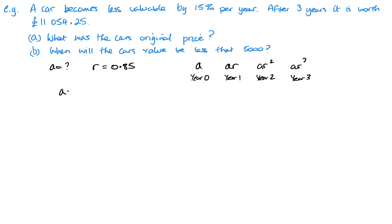So looking at this, we've got ar cubed is going to be equal to that 11,054.25. Now we know that r is 0.85 cubed, so it should be a very straightforward calculation and we get 18,000. So the original price is 18,000 pounds.